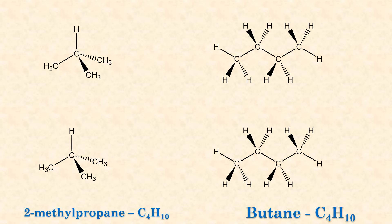Let's close with constitutional isomers 2-methylpropane and butane. They both have the same molecular formula, but are structured differently. Butane is unbranched, meaning that all carbon atoms are joined in a line.